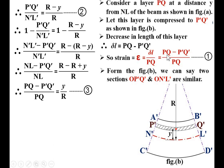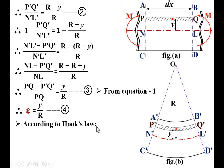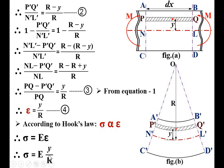From Equation 1, epsilon = (PQ − P'Q') / PQ. From Equation 3, (PQ − P'Q') / PQ = y / R. Therefore, epsilon = y / R. This is Equation 4. According to Hooke's Law, stress is directly proportional to strain, so sigma = E × epsilon. Substituting epsilon = y / R: sigma = E × (y / R), which can be rearranged as sigma = (E / R) × y. This is Equation 5.